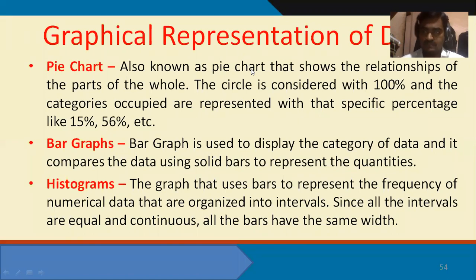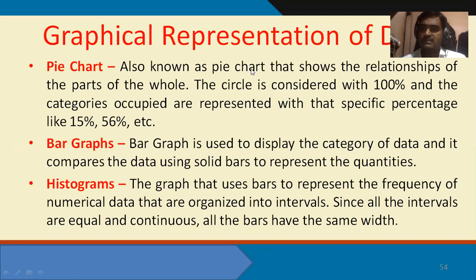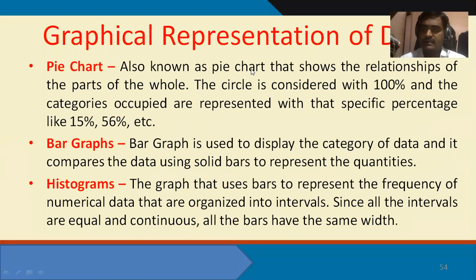With the bar graph we can compute intergroup comparisons. For example, from 1999 up to 2020, what is the inflation rate in India? Every year has different inflation values, so the comparison of inflation from 1999 to 2000, 2001, 2002, and so on can be seen through intergroup comparison in the bar graph. The bar graph comes in two types: vertical bar graph and horizontal bar graph.